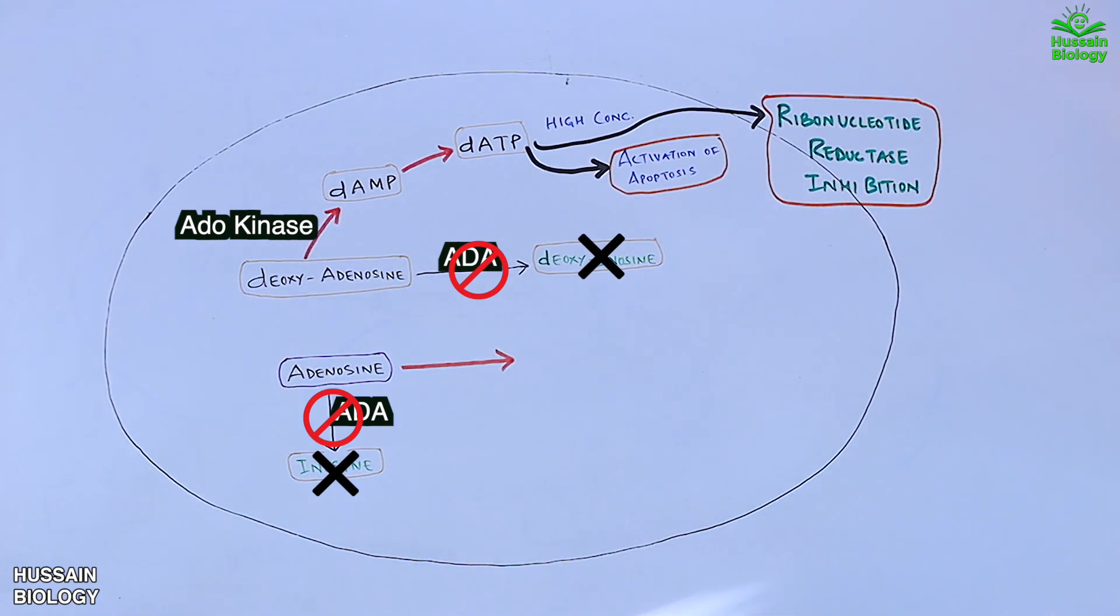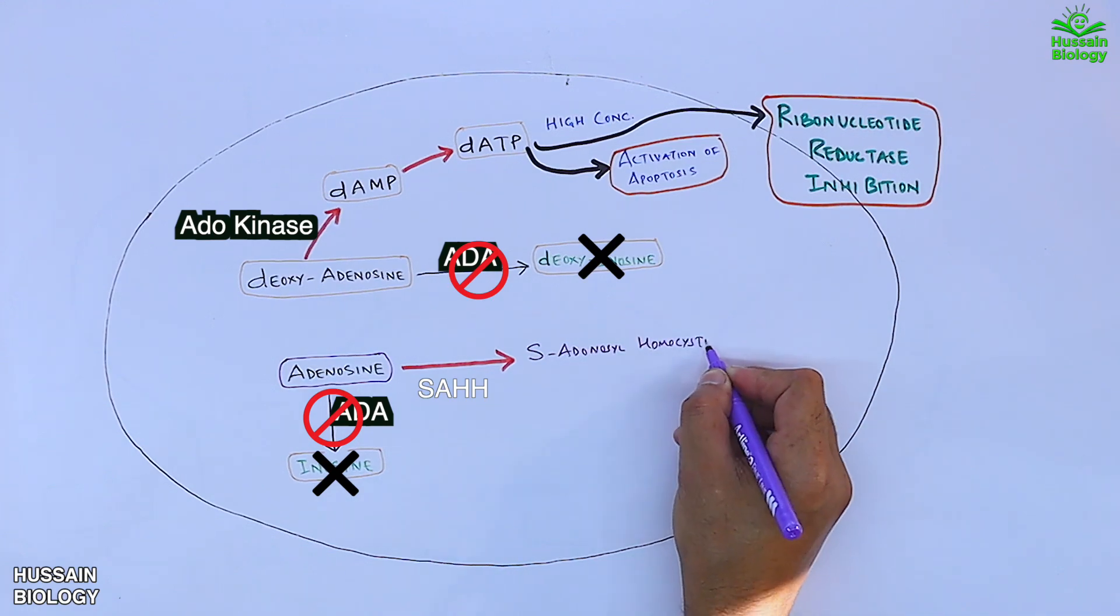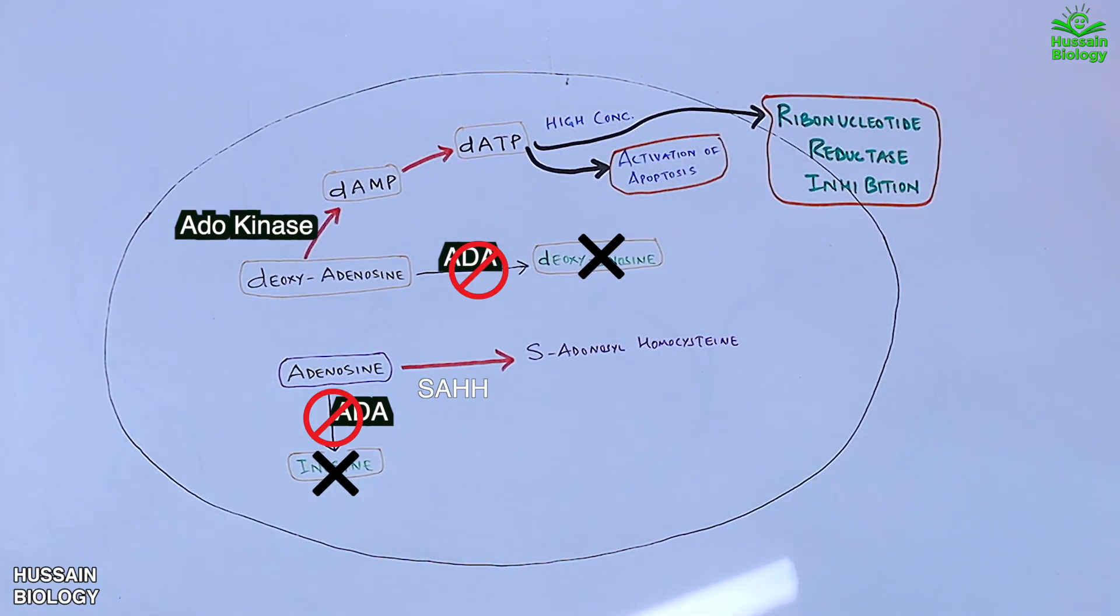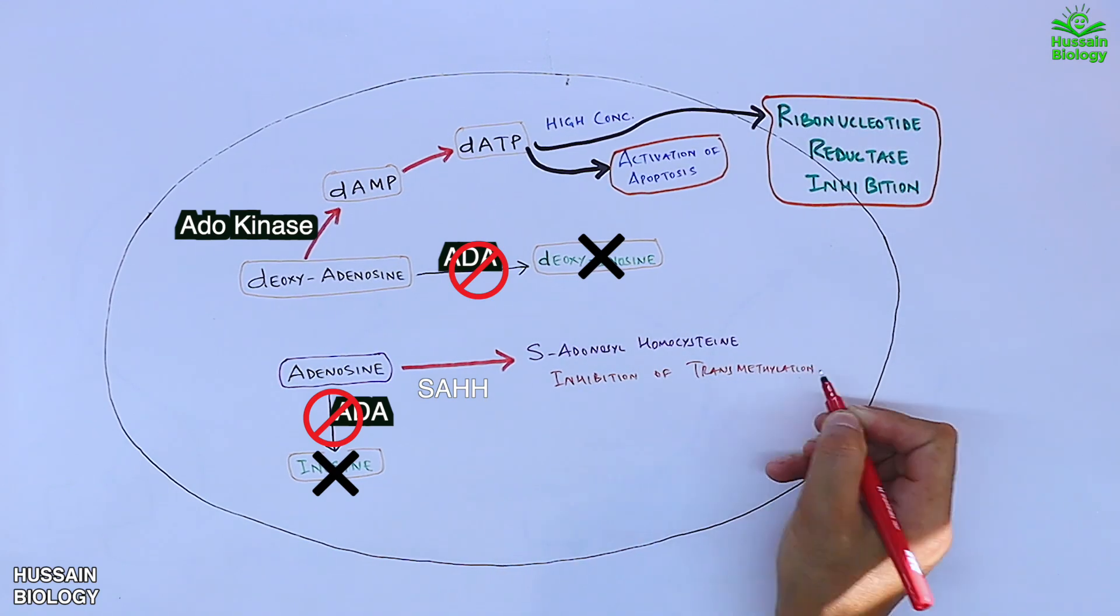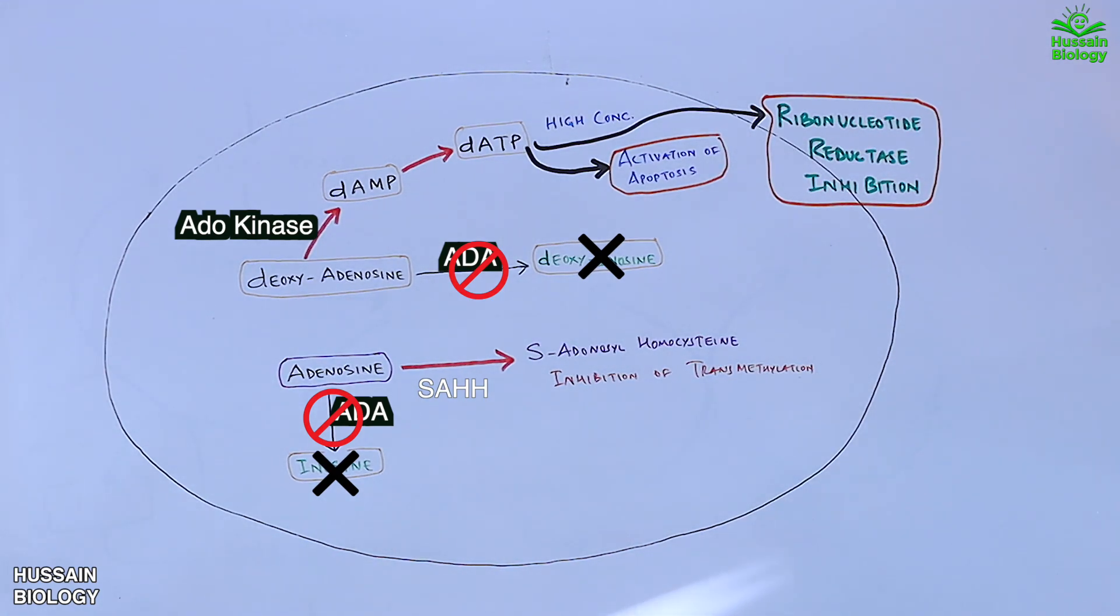So this adenosine is acted upon by SAHH (S-adenosyl homocysteine hydrolase). This enzyme converts adenosine to S-adenosyl homocysteine, which is again toxic to lymphocytes and it drives the inhibition of transmethylation which is important within the cells.